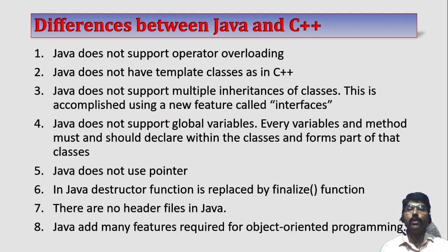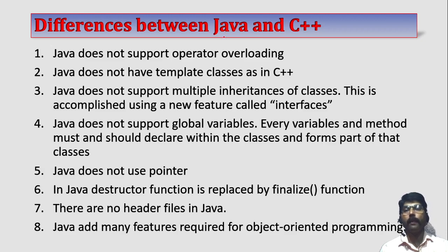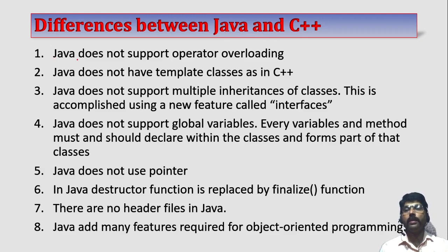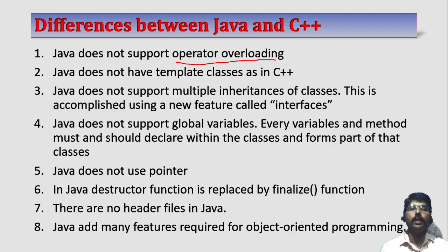Apart from this, C++ also has some differences. Some parts from C++ are removed in Java, which are related to object-oriented features. One of them is: Java does not support operator overloading. In C++, the operator overloading feature is there, which is removed in Java to make the Java program very simple.